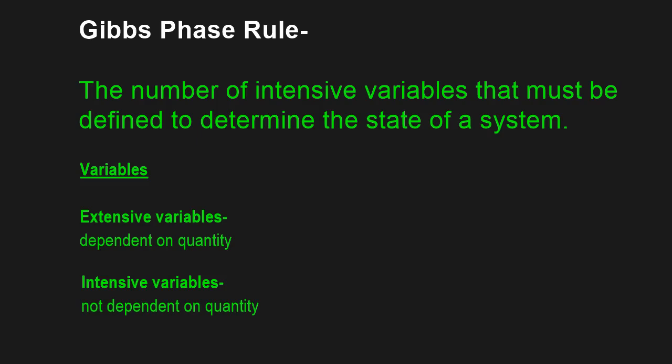Variables can come in two forms: they can be extensive or intensive. A variable is just a property of a system. So if I have a glass of water, I can know its volume, its mass, the number of moles in that water — these are all extensive variables. They depend on the quantity of that system. Intensive variables are not dependent on the quantity — things like temperature, pressure, and density.